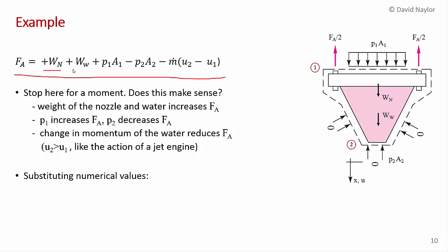Also, the water in the nozzle, the bolts are supporting the weight of the water. So if the weight of the water or the weight of the nozzle increases, FA increases. That is consistent with common sense. The pressure at P1 acts downwards. It's going to add extra tension to the bolt. And the pressure at 2, if there was one, if it wasn't zero gauge, acts upward. It's going to reduce the tension in the bolts. So that makes physical sense.